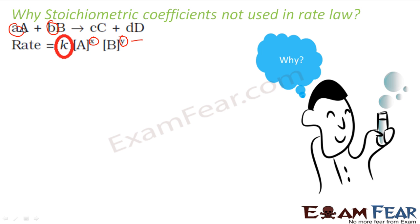They were happy with the rate law because they were able to solve questions — the theoretical values and the experimental values were matching — but they were confused why X and Y had to be determined experimentally and why they were not matching with A and B.